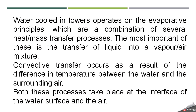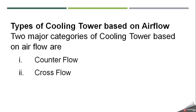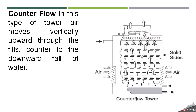Types of cooling towers based on airflow: the two major categories are counter flow and cross flow. In counter flow, air moves vertically upward through the fill, counter to the downward falling of the water.